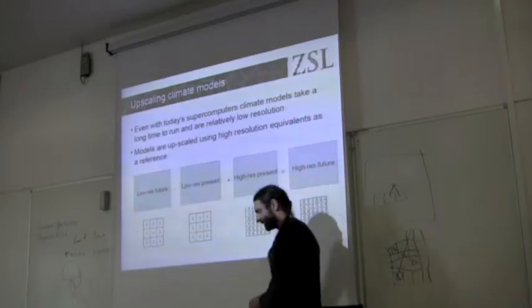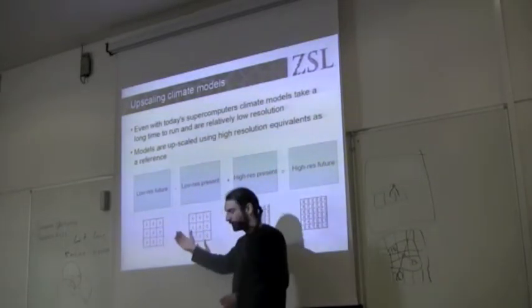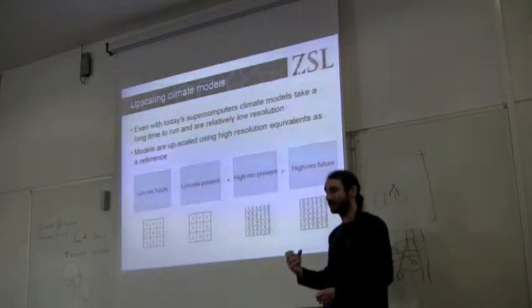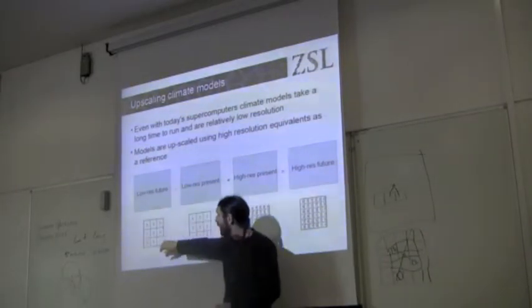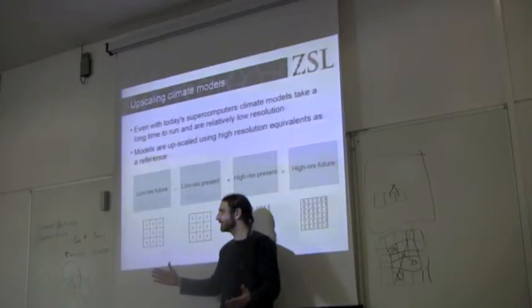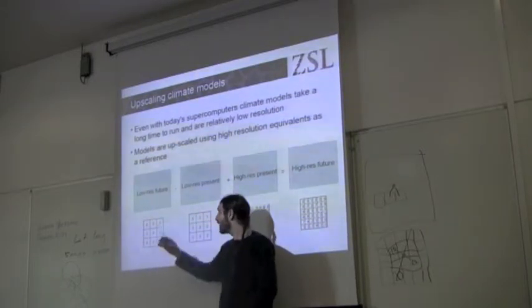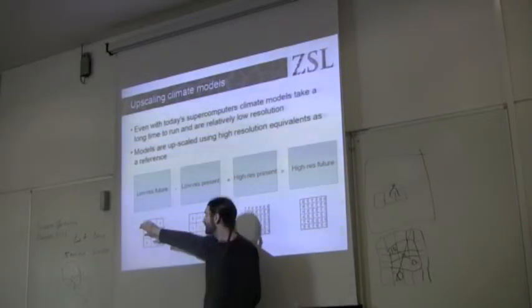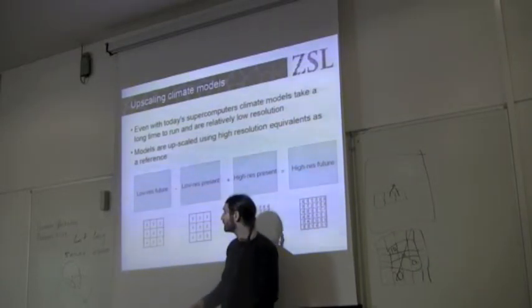So, there's a big spread of uncertainty on these future projections and this is obviously controversial. The way that we construct our future climate data sets is interesting and worth considering. So, because modelling the whole climate of the world is a computationally intensive process, the data that we get out from these models tends to be relatively coarse-resolution because that reduces the computational effort required.